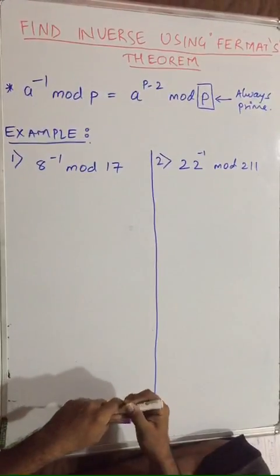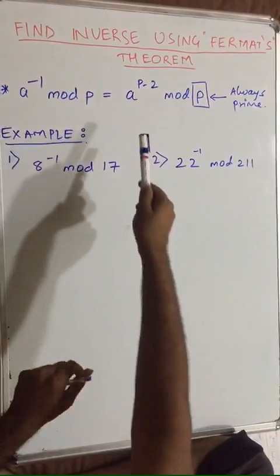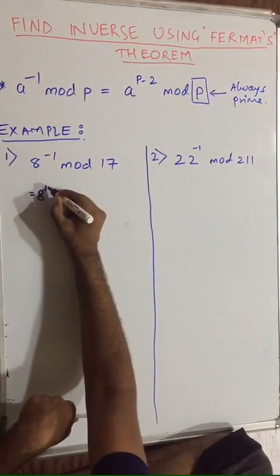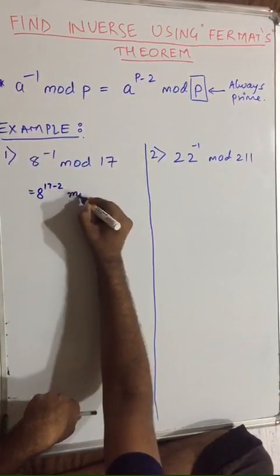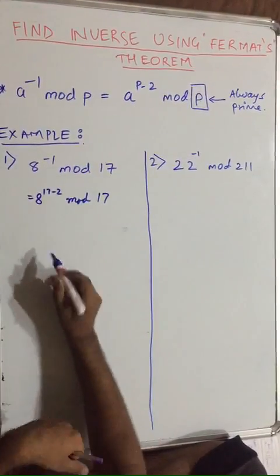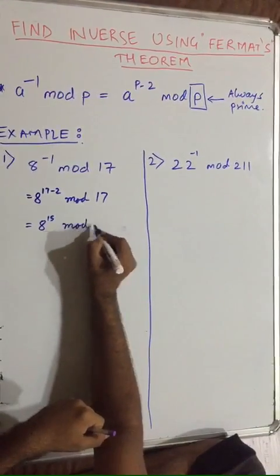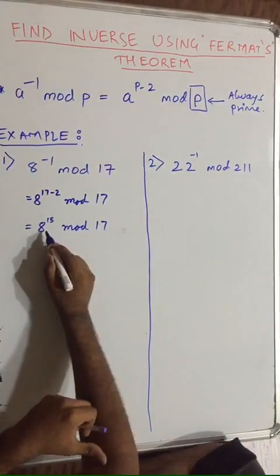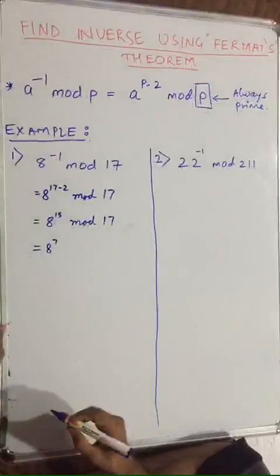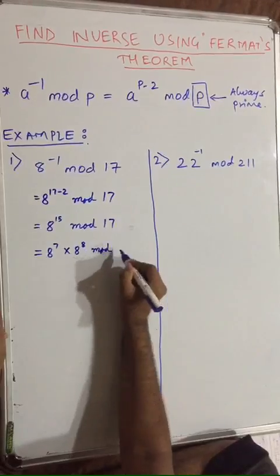The first equation we have is 8 inverse mod 17. We can see that 17 is a prime number, so we will be applying this formula. So 8 inverse will be equal to 8 raised to 17 minus 2 mod 17 — 17 minus 2 because a raised to p minus 2 is our formula, and p here is 17. So we can write it as 8 raised to 15 mod 17. Now to find its inverse, we have to factorize it. So we can write it as 8 raised to 7 into 8 raised to 8 mod 17.